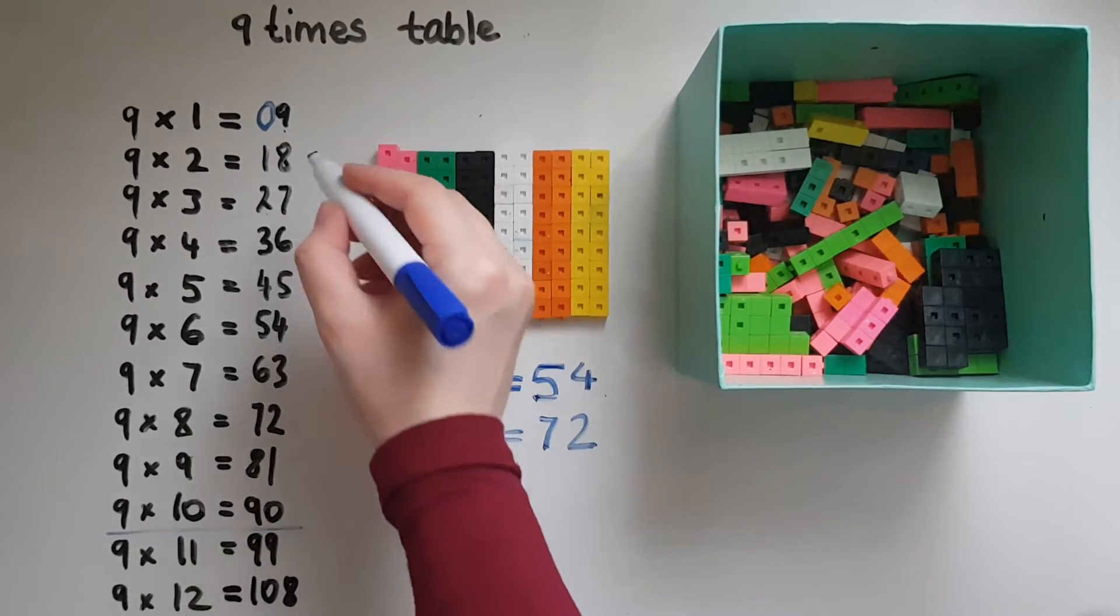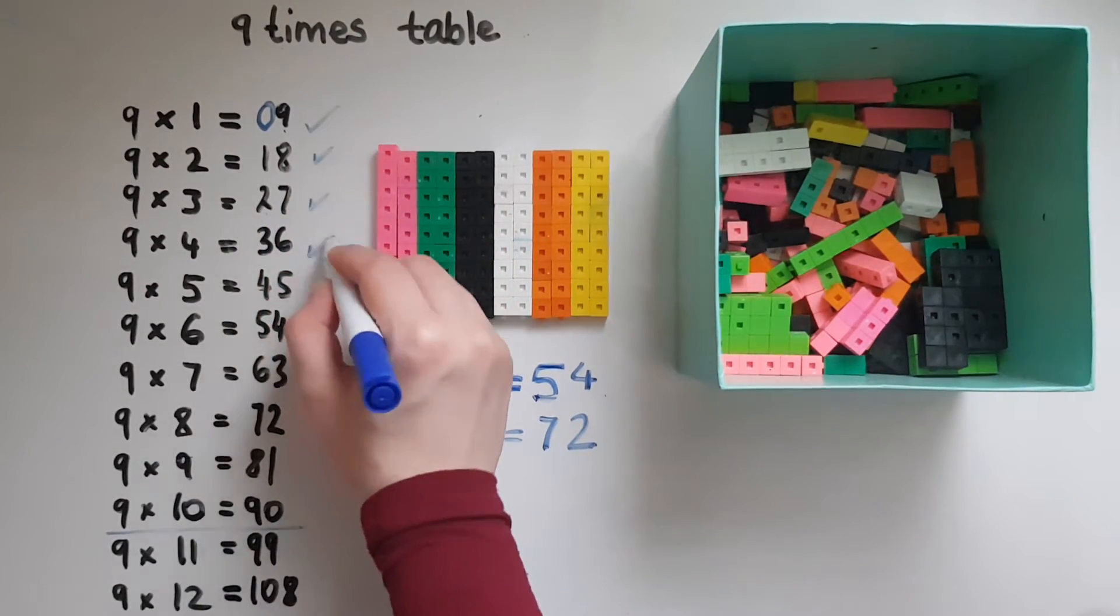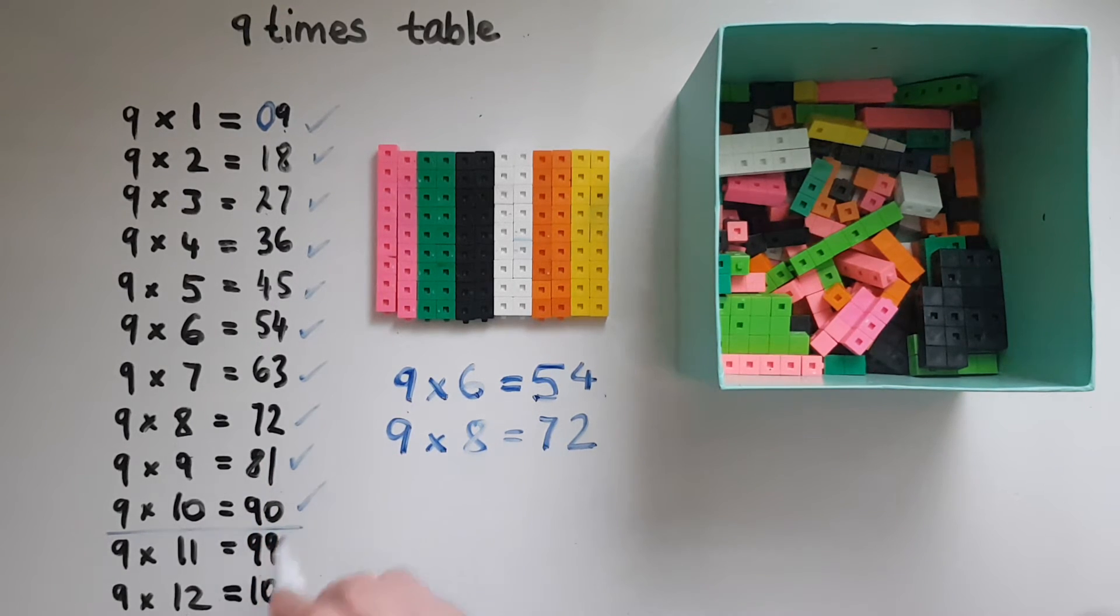So up to 10, these are straightforward to work out as long as you remember this trick. 9 times 10: just add a 0 at the end. 9 times 11 is 99, so 9 for the tens and 9 for the units. That is easy to work out.